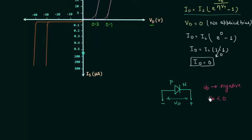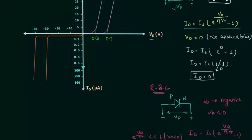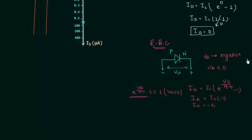In the reverse bias condition, Vd is negative (Vd less than 0). When Vd is negative, e raised to power Vd over eta Vt is less than 1, so we can neglect this term. This gives Id = Is times (0 minus 1), or Id = minus Is. The direction of current in reverse bias is opposite to the forward bias direction. The only current present is the reverse saturation current Is, and its direction is accordingly reversed. The reverse saturation current is also called leakage current.